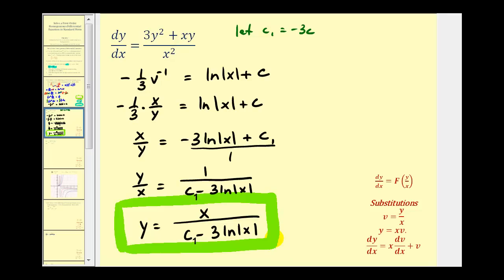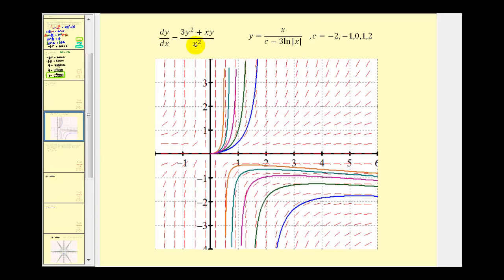And this would be our general solution to the original homogeneous differential equation. Let's finish by taking a look at this graphically. The red slope field can be generated using the original differential equation, and here's our general solution. Several of the possible solutions are graphed with c equals negative two, negative one, zero, one, and two. Each graph in a different color represents one of the solutions from the family of solutions. In part two, we'll take a look at a second example of solving a first-order homogeneous differential equation. I hope you found this helpful.